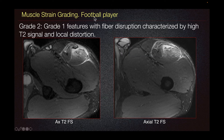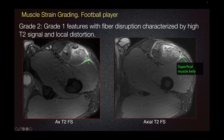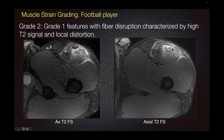This is a different football player demonstrating a grade 2 strain proximally. We can see significant edema and feathery appearance of the rectus femoris, involving the inner muscle belly but also the superficial muscle belly arising from the direct head in the anterolateral aspect of the muscle. These findings are consistent with grade 2 strain, which has grade 1 features with fiber disruption, as we can see in this area.